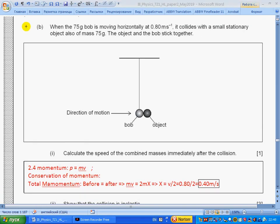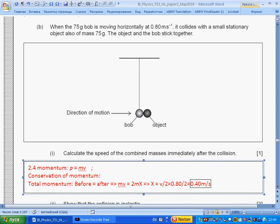Part b: When the 75-gram bob is moving horizontally at 0.80 meters per second, it collides with a small stationary object also of mass 75 grams. The object and the bob stick together. Calculate the speed of the combined masses immediately after the collision. Section 2.4: momentum equals mass times velocity. Conservation of momentum: total momentum before equals total momentum after. Total momentum before is mv. After, it's 2m times the new speed, so new speed will be half of initial speed of collision: 0.40.